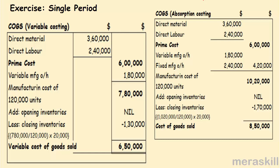First I am making the cost of goods sold under variable costing. The prime cost part is the same — direct material, direct labor. Then variable manufacturing overheads, 180. So 780,000 is the manufacturing cost of 120,000 units. What was the cost under absorption? It was 1,020,000 — this 240,000 has been omitted here. Opening inventory is nil. What is the value of closing inventories? 780,000 is the value of 120,000. Therefore what is the value of 20,000? It is 130,000. Your difference lies here.